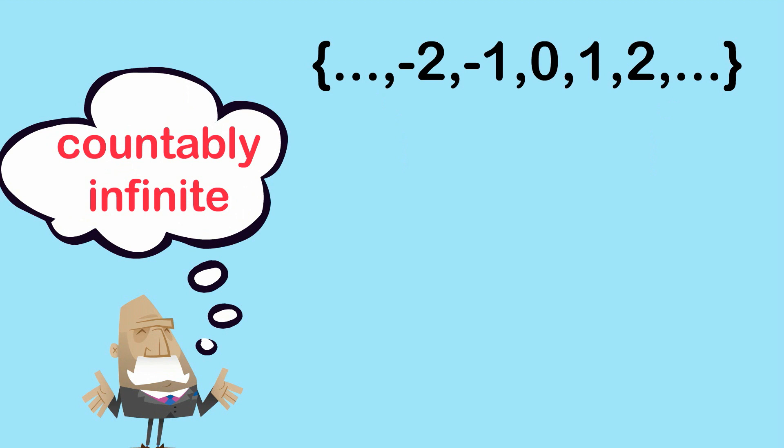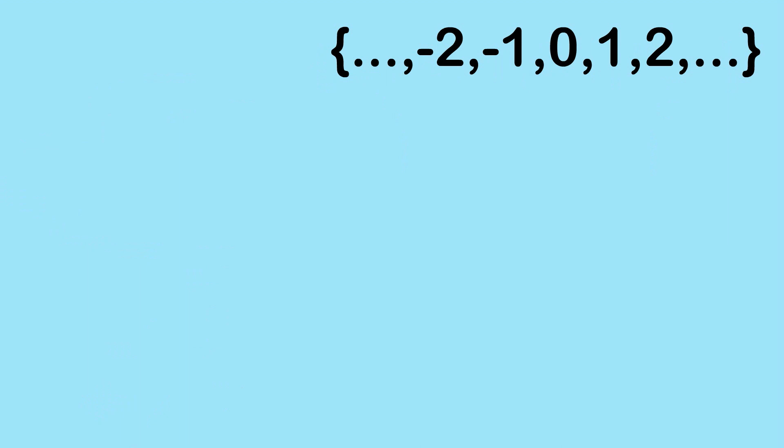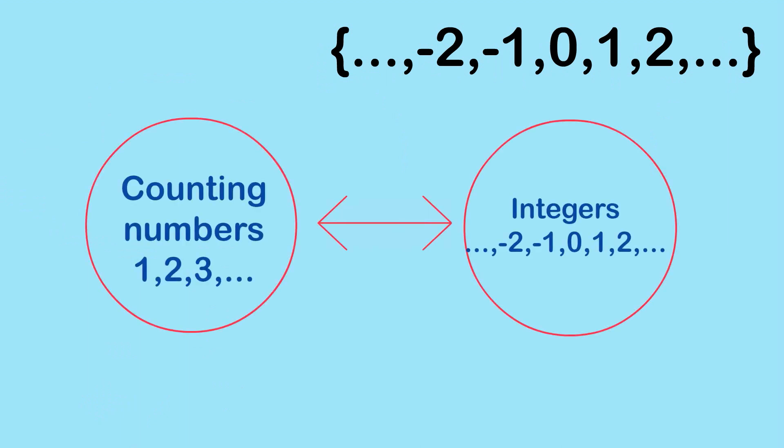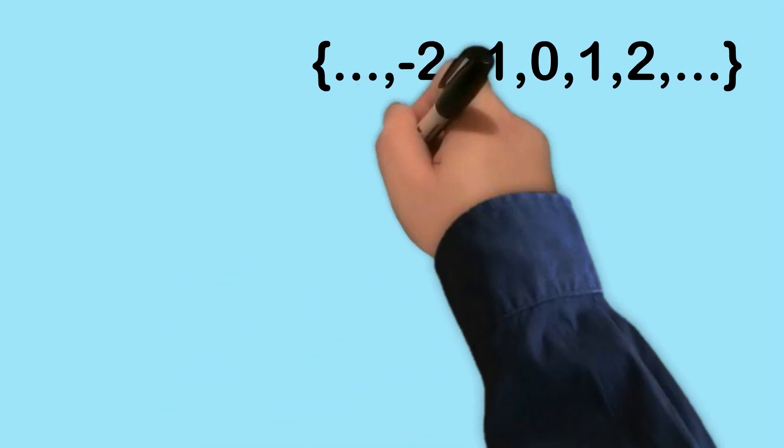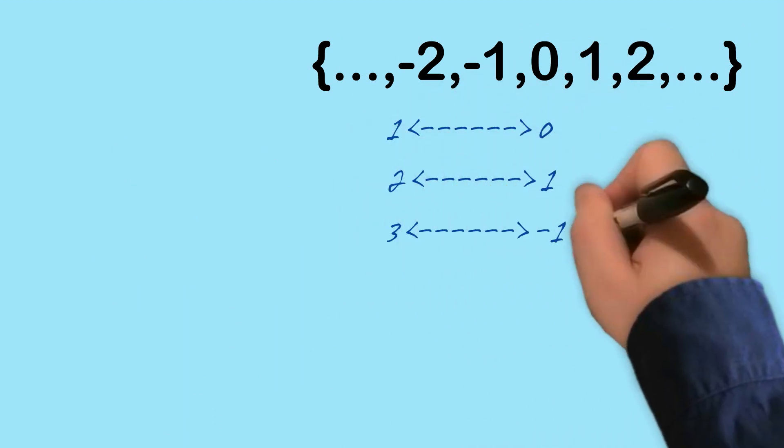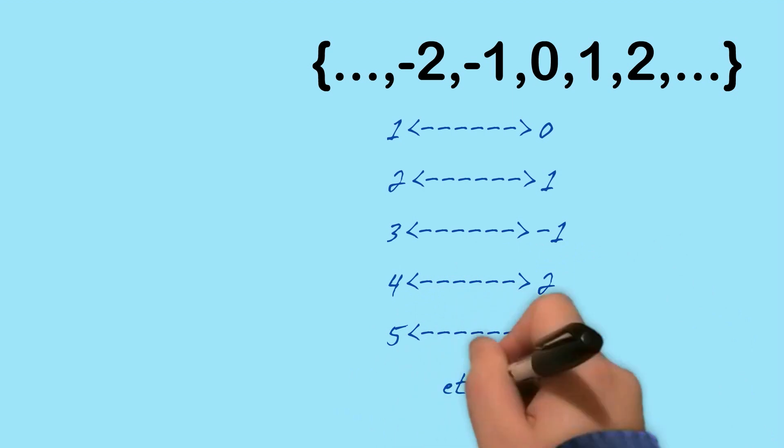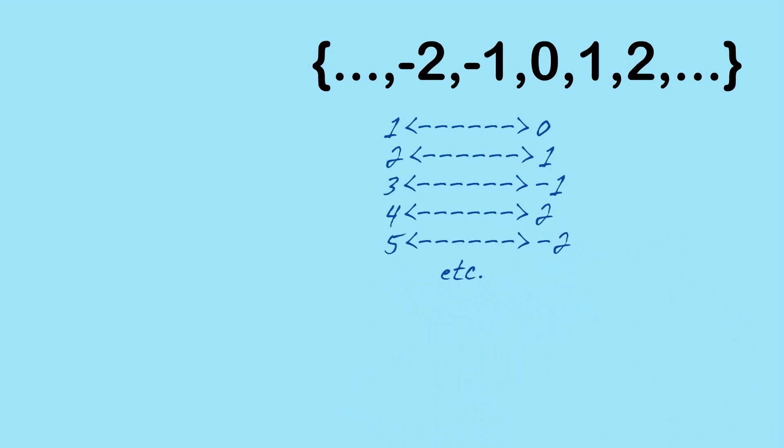So I want to show you how we would demonstrate that the number of integers is countably infinite. What we do is we work out a rule that links every counting number with a unique integer, and in turn every integer is uniquely linked to a counting number. So one way we could do this is to start at that middle 0 and work our way sort of out both sides. So we'll map the counting number 1 to 0, 2 to 1, 3 will map to negative 1, 4 will map to 2, 5 will map to negative 2, and this process can obviously continue as long as we want.